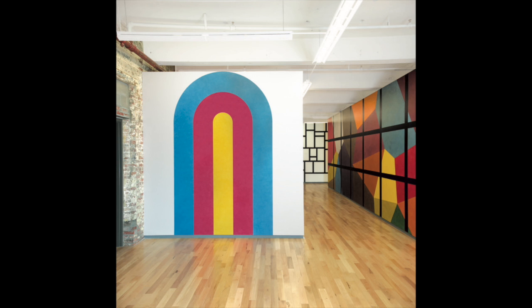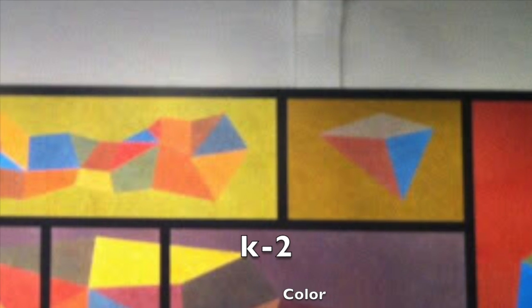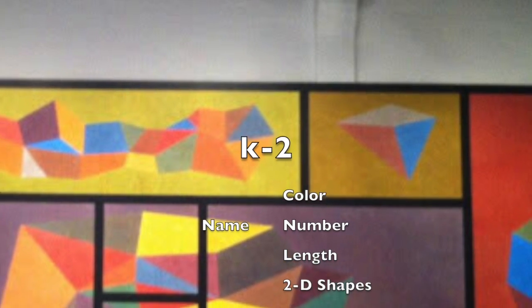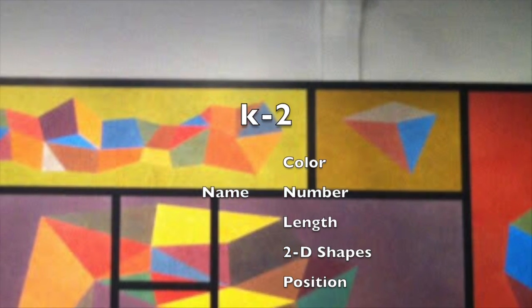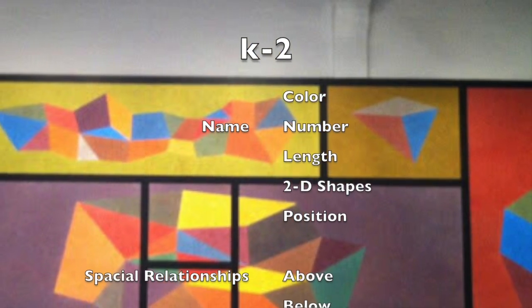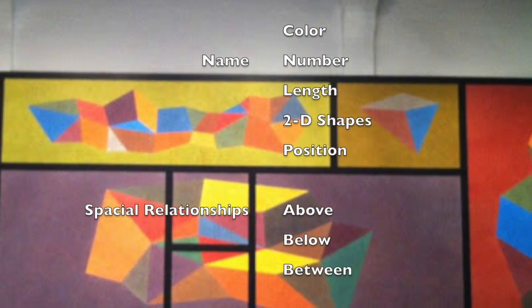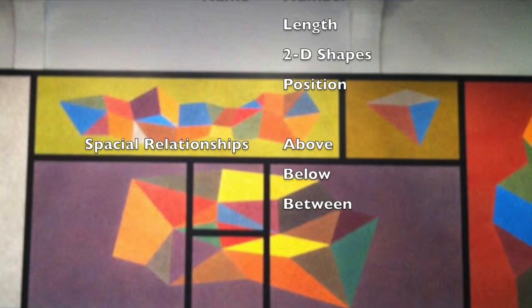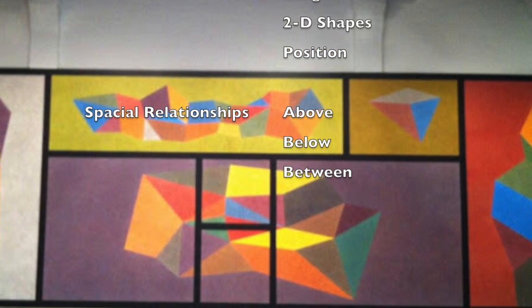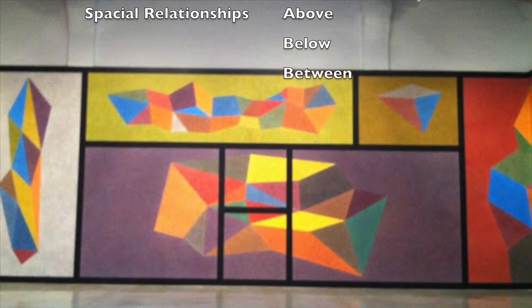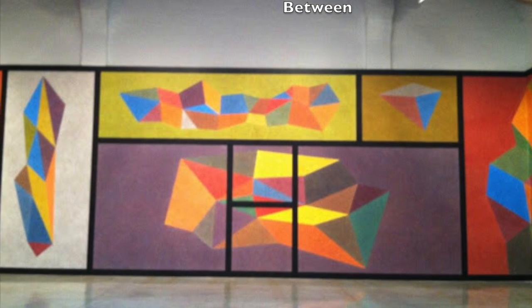If you're teaching students in kindergarten to second grade, you can use directions that reference color, number, length, and position, as well as some very basic two-dimensional shapes. Directions can also include references to terms that describe spatial relationships such as above, below, and between.